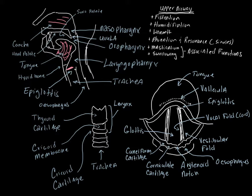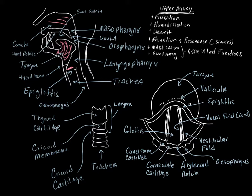To orient you: up here is ventral and down here is dorsal. If your patient is lying down, their nose is going to be up here and their spine — the back of their neck — is going to be down here. The large structure here is the tongue — we've swept the tongue up and out of the way. There's a little valley separating the tongue from the epiglottis, a small flap of tissue.